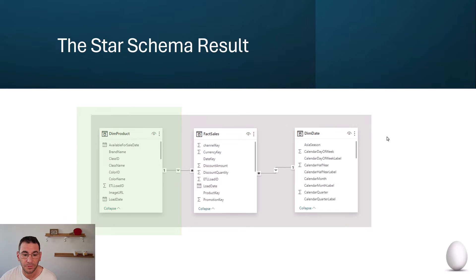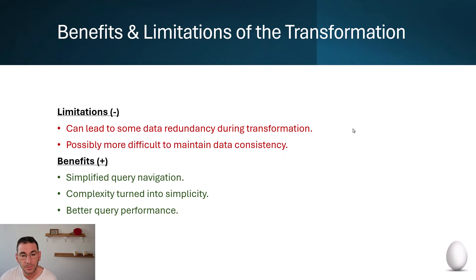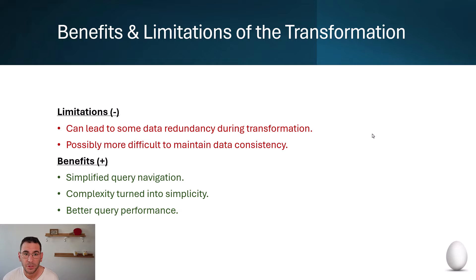There are a few limitations and benefits to this transformation. The limitations are that it can lead to some data redundancy and it can be more difficult to maintain in terms of data integrity and data consistency, because we are merging all the tables and end up with a lot of columns rather than smaller, more manageable tables. However, there are also benefits — this is why we're doing this: we have simplified query navigation, the complexity of the data model is simplified overall, and most importantly we should have better query performance.